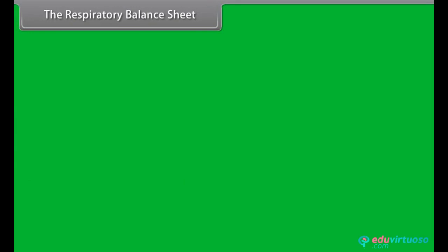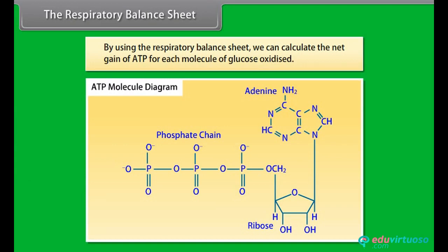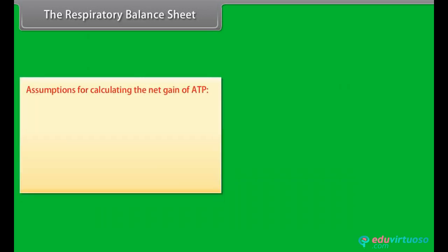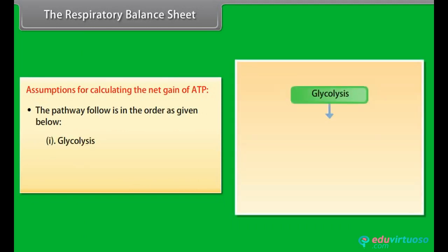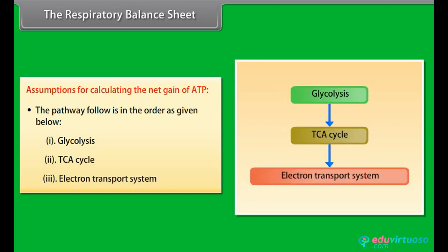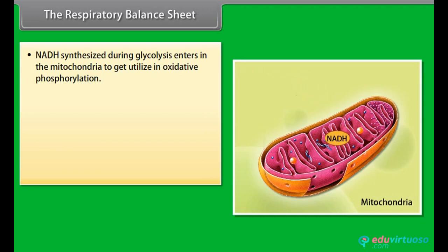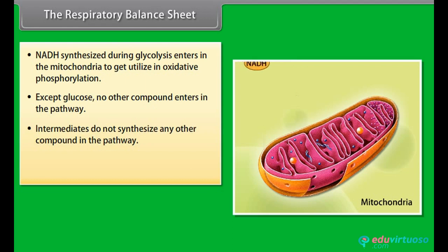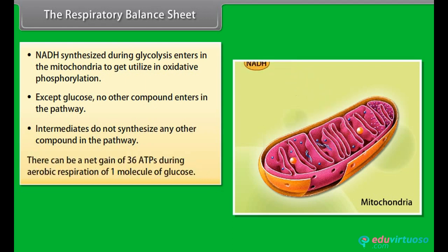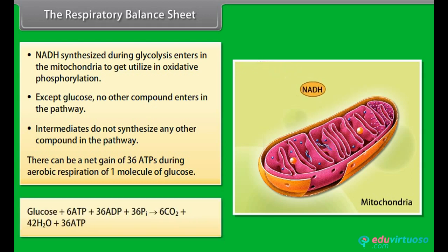The respiratory balance sheet allows us to calculate the net gain of ATP for each molecule of glucose oxidized. The pathway followed is: glycolysis, TCA cycle, and electron transport system. NADH synthesized during glycolysis enters the mitochondria for oxidative phosphorylation. No other compound except glucose enters the pathway. There can be a net gain of 36 ATPs during aerobic respiration of one molecule of glucose. The equation is: C₆H₁₂O₆ + 6O₂ + 36ADP + 36Pᵢ → 6CO₂ + 42H₂O + 36ATP.